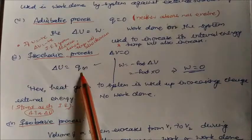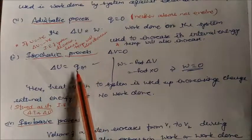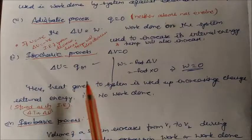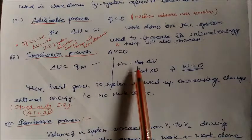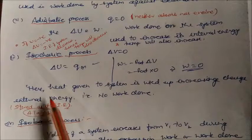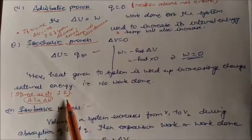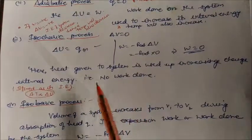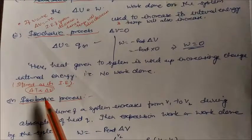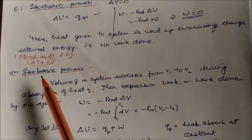In an isochoric process, volume is constant (ΔV = 0), so w = −p_external × ΔV = 0. Therefore ΔU = q, where q is the heat absorbed or evolved at constant volume. All heat supplied to the system is stored as internal energy; no work is done. Change in temperature is proportional to change in internal energy.